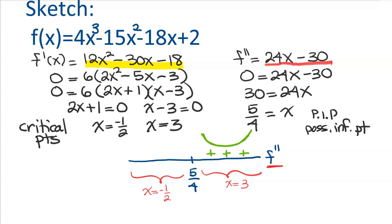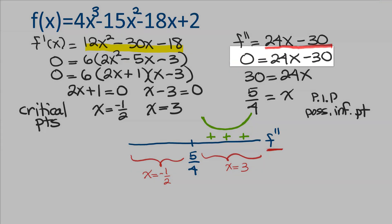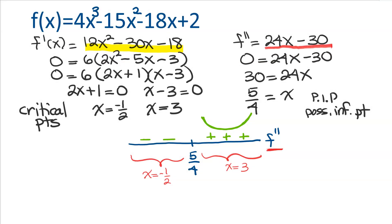Plugging negative 1 half into your second derivative, you're going to get a negative value. And a negative second derivative means you are sad, you are concave down. So this gives me a lot of information. For one thing, because 5 fourths is a place where the concavity changes, this is definitely where my inflection point is.